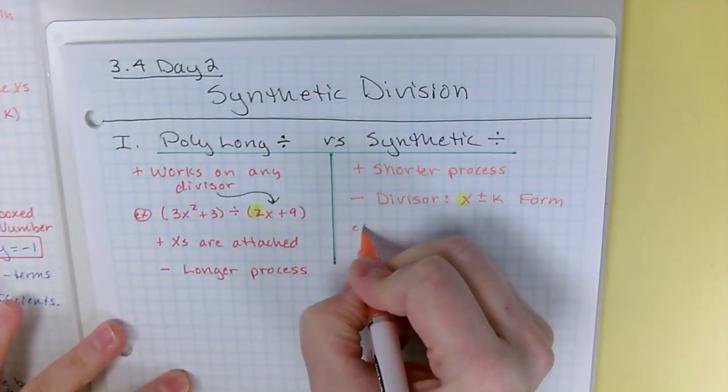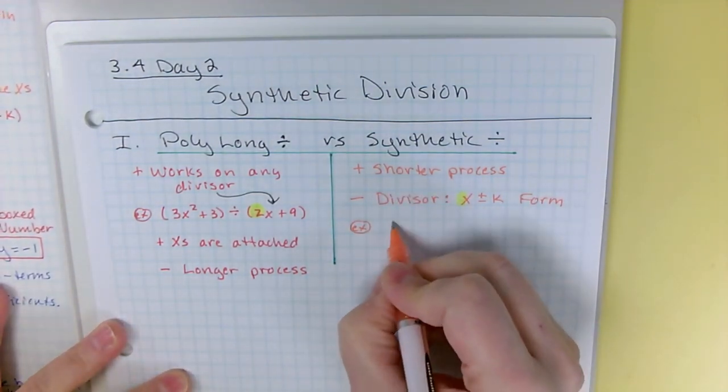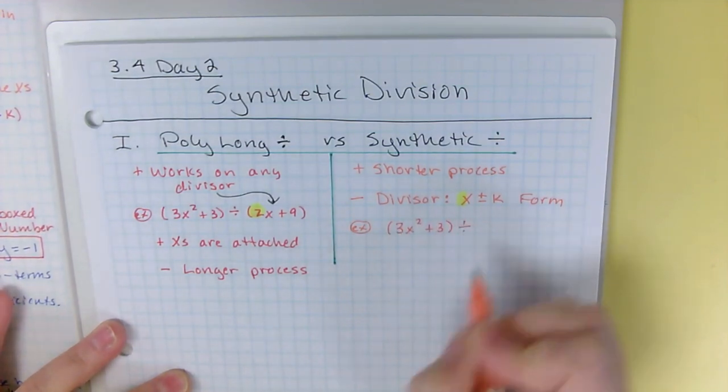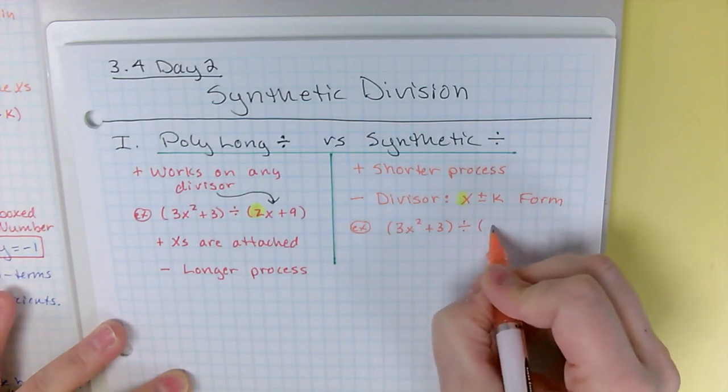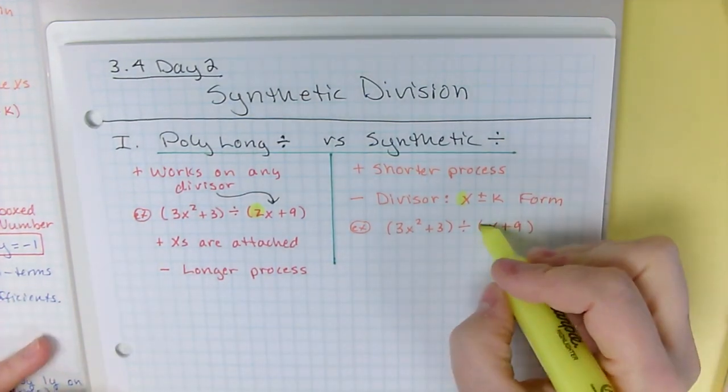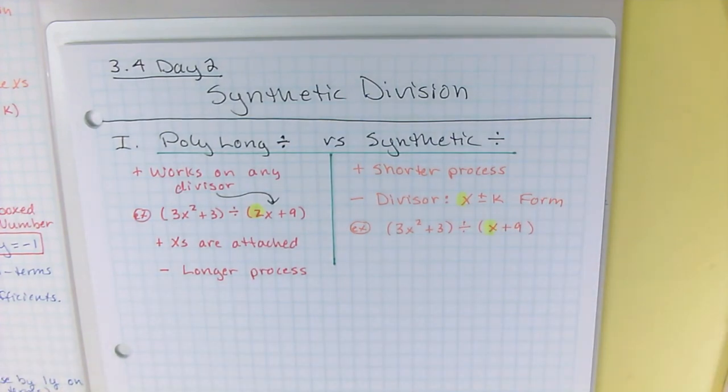So for example, if you had 3x² + 3, if we use synthetic, we could only use it if we were doing something like x + 9, where the x was by a 1x by itself. So very limited in that way.